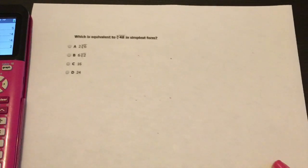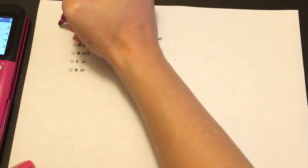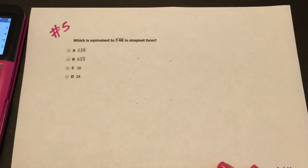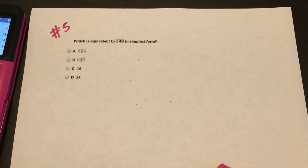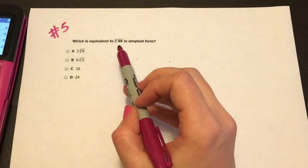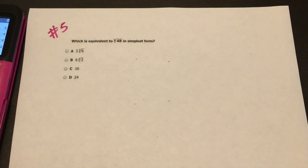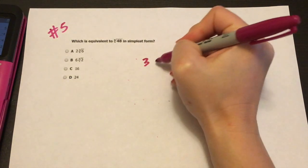All right. And lastly, number five for this series. So this is going to be number five. Which is equivalent to the cube root of 48. So what we're going to do is we're going to rewrite this. All right.